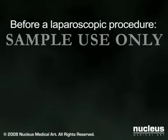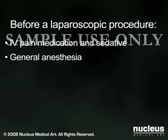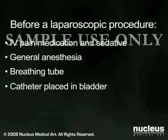When you arrive at the hospital for your procedure, an intravenous line will be started and you may be given a sedative to help you relax. Pelvic laparoscopy is done under general anesthesia, which will put you to sleep for the duration of the operation. A breathing tube will be temporarily inserted through your mouth and into your throat to help you breathe during the operation. A catheter will also be placed in your bladder to drain your urine.